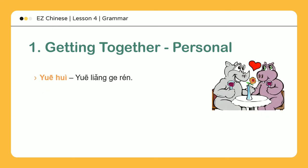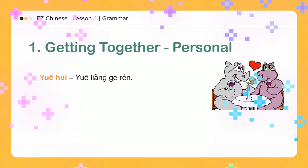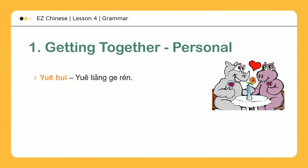Getting together — Personal meetings. 约会: 约两个人 — Date. Two people dating. Make a date with friends — to make a lunch or dinner date with friends.